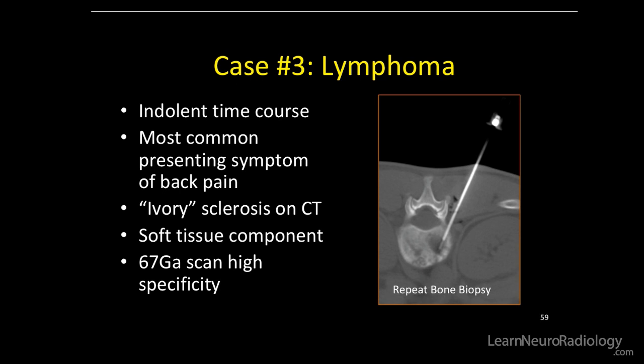Just like this patient, the most common presenting symptom is back pain when you have lymphoma of the spine, and ivory sclerosis on CT is one of the classic buzzwords for spine lymphoma. You can have a soft tissue component like this case, and nuclear medicine studies can be helpful with high specificity for diagnosis, but biopsy is usually needed.